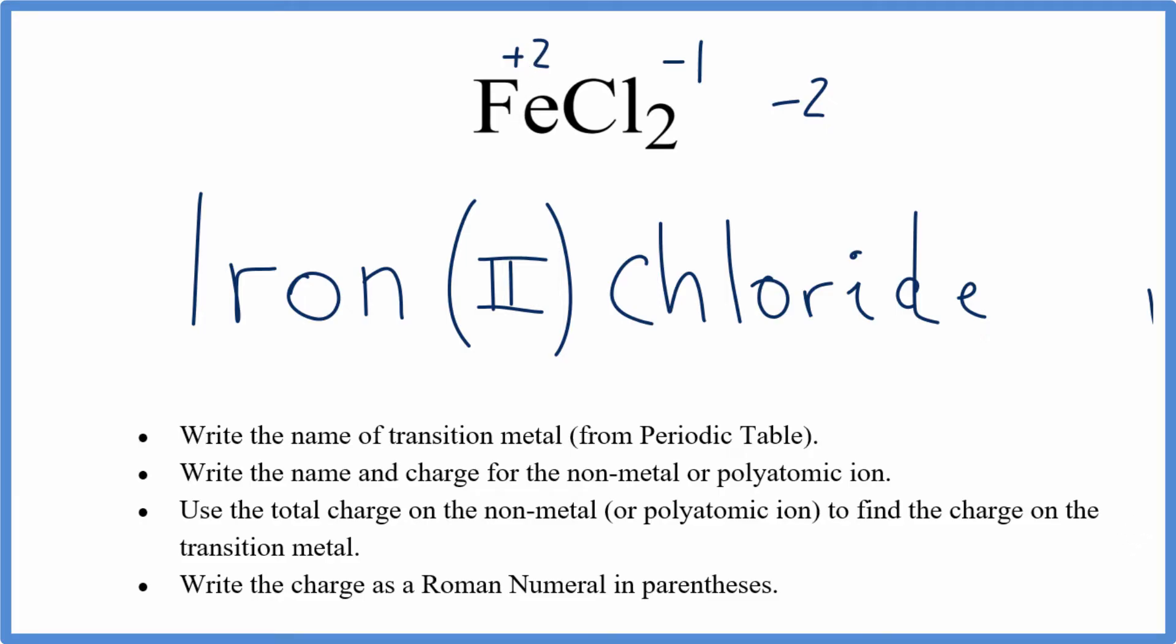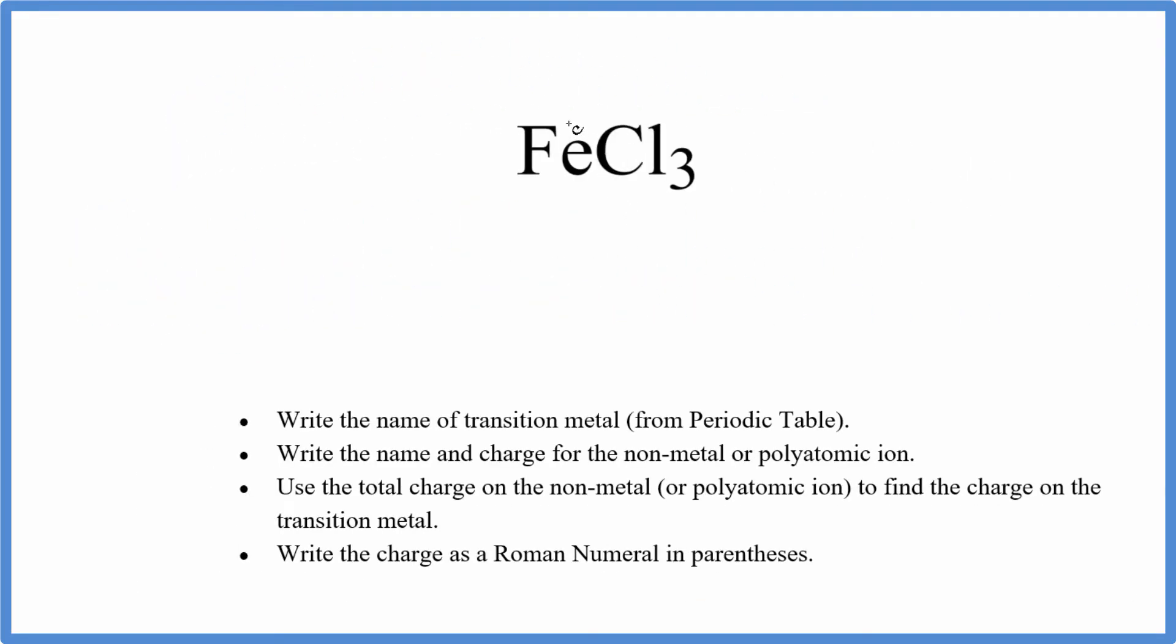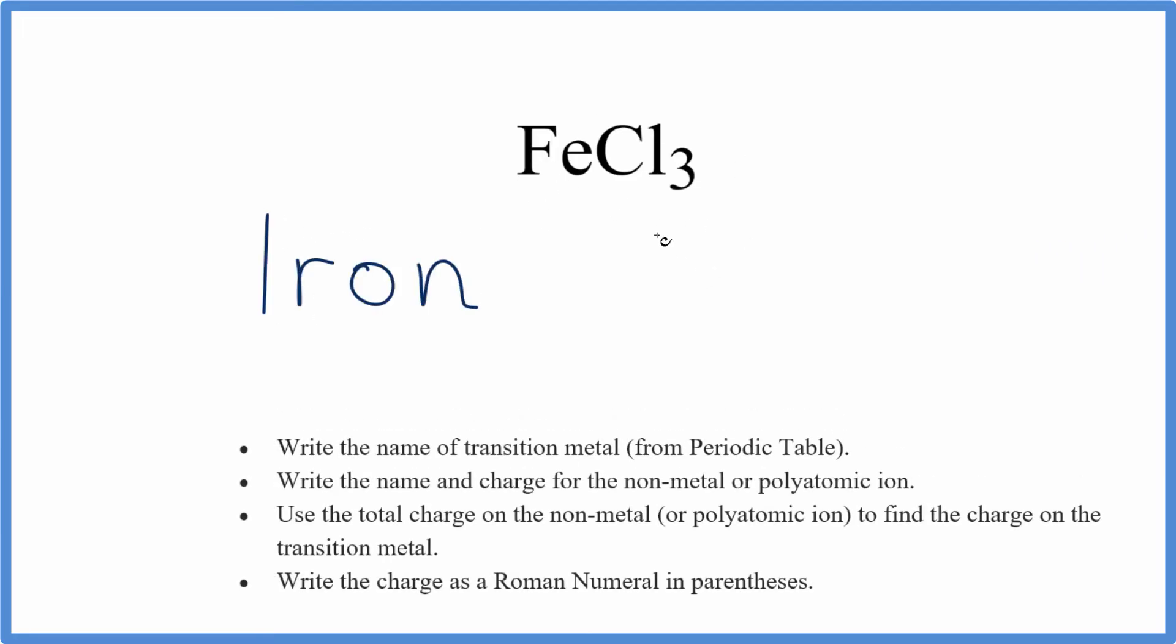Let's try another one, FeCl3. Pause and see if you can figure this one out. So we write the name of the transition metal, that's iron. And then we write the non-metal, that's the chlorine. We change the INE to IDE.